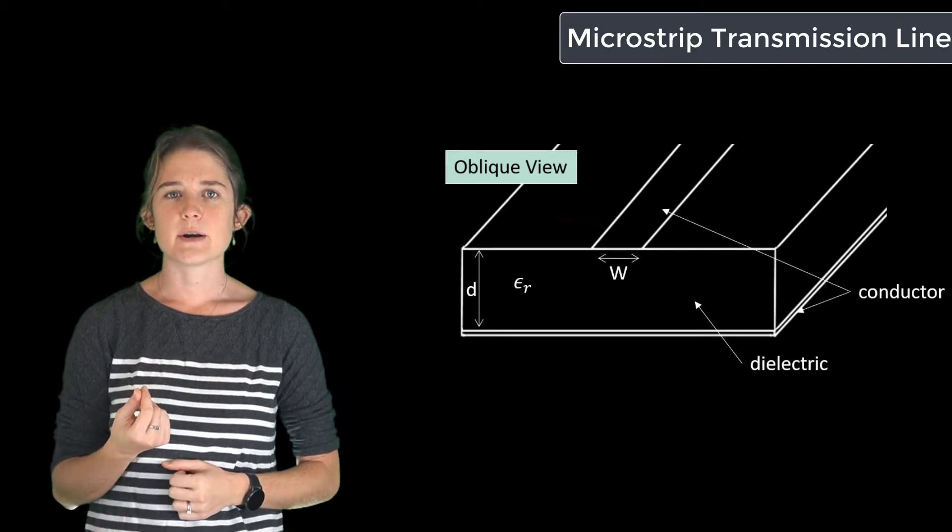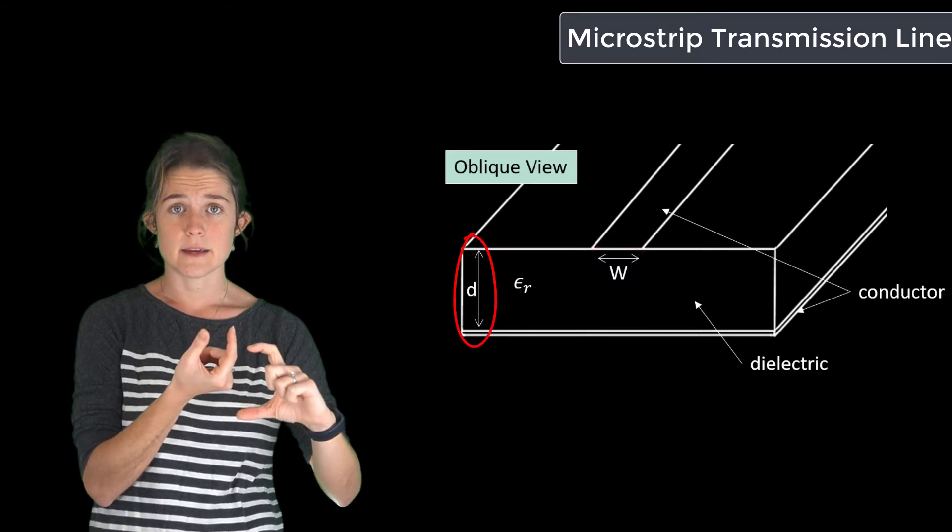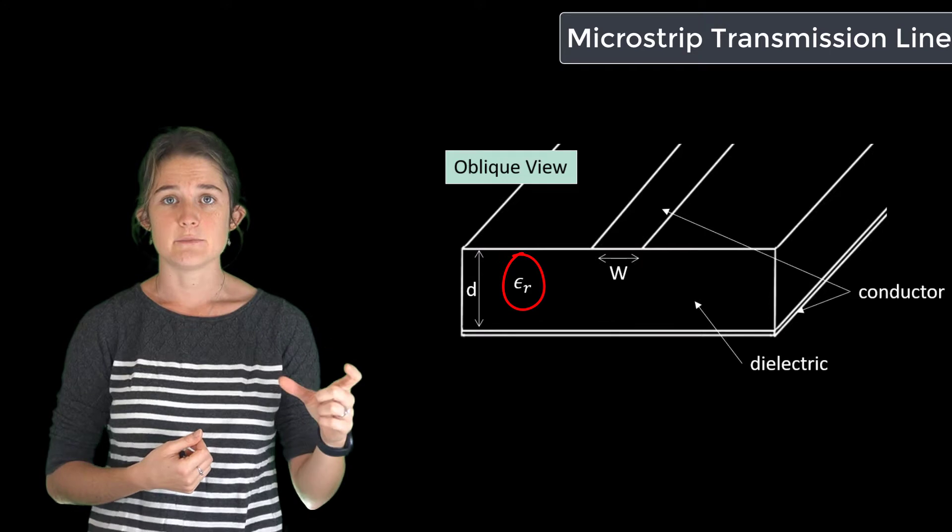The geometric parameters we have to work with are w, the width of the top trace, d, the thickness of the dielectric, and epsilon r, the dielectric relative permittivity.